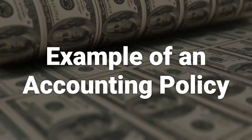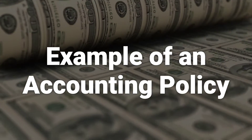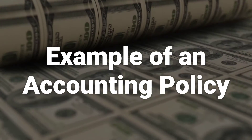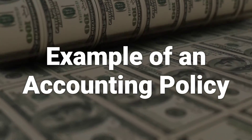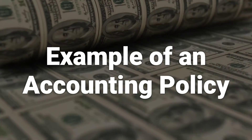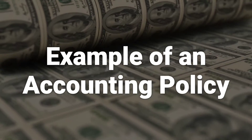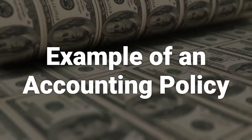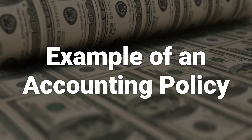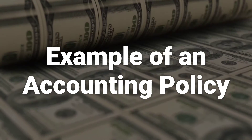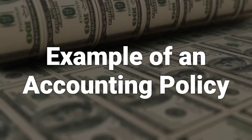Under the average cost method, when a company sells a product, the weighted average cost of all inventory produced or acquired in the accounting period is used to determine the cost of goods sold, COGS. Under the FIFO inventory cost method, when a company sells a product, the cost of the inventory produced or acquired first is considered to be sold. Under the LIFO method, when a product is sold, the cost of the inventory produced last is considered to be sold. In periods of rising inventory prices, a company can use these accounting policies to increase or decrease its earnings.